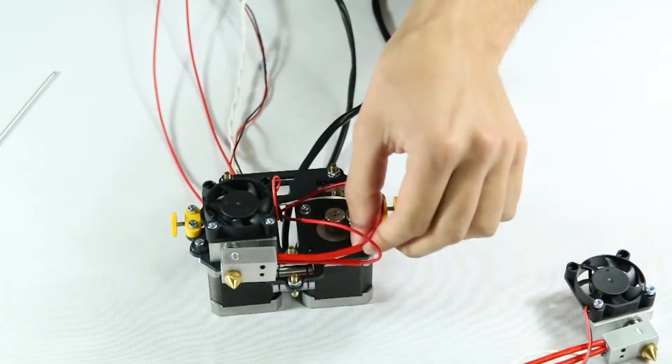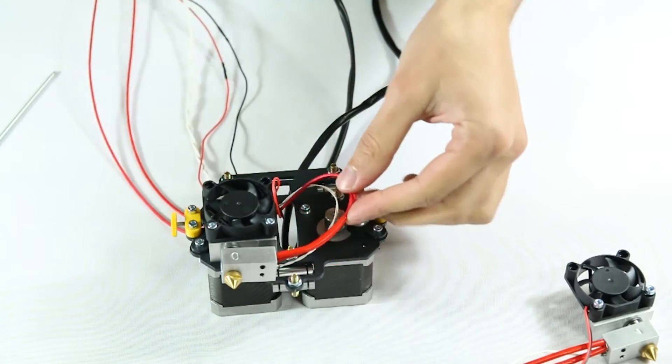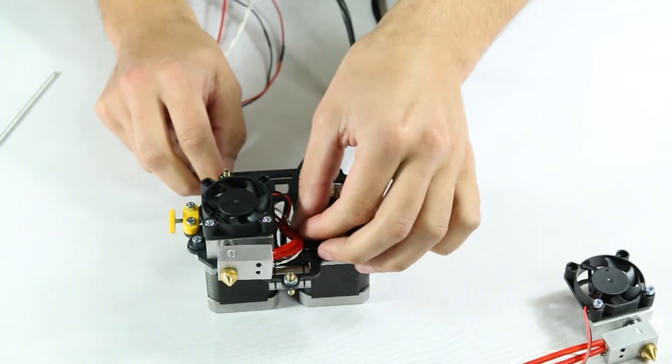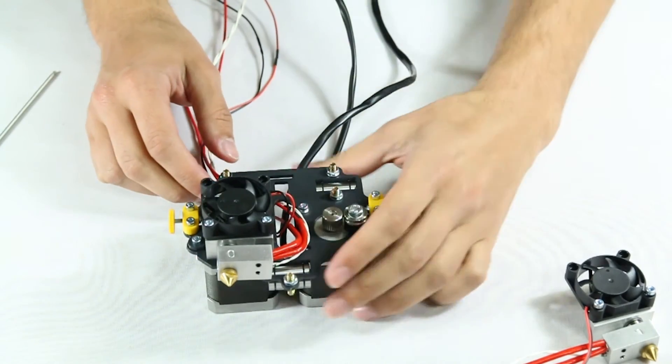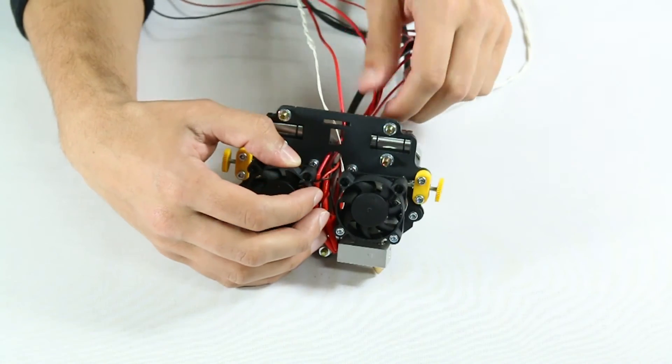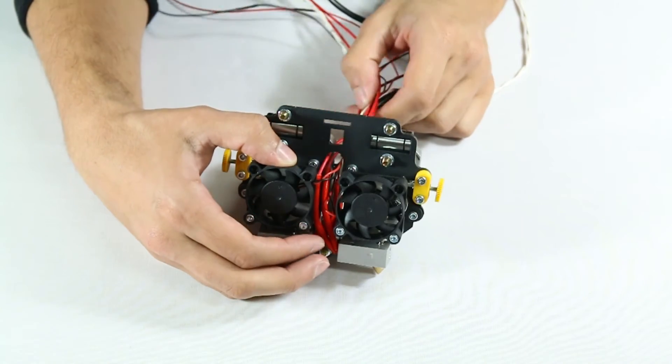A very important point we must stress right away, is to never rest the extruder upon either one of the brass nozzles. Now repeat the same for the other extruder end and respective wiring.